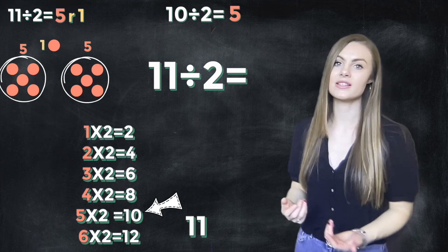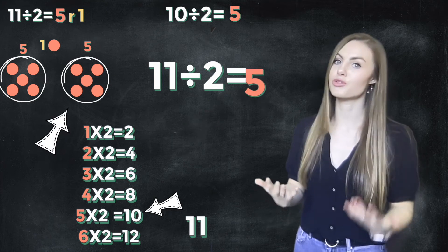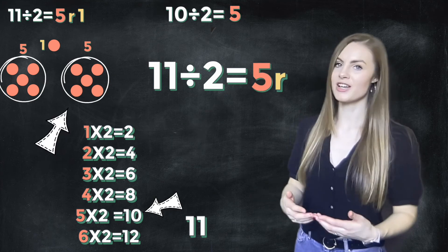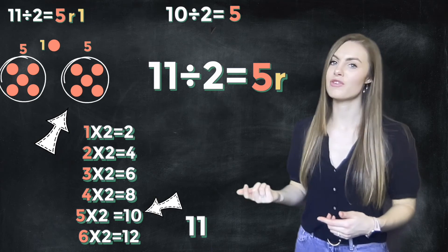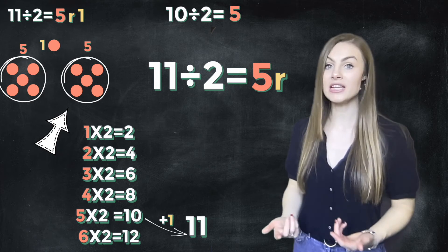When we share out 10 we can see that there are 5 in each group. To find our remainder we count on from 10 to our number. As 11 is only one more than 10, our remainder is one.